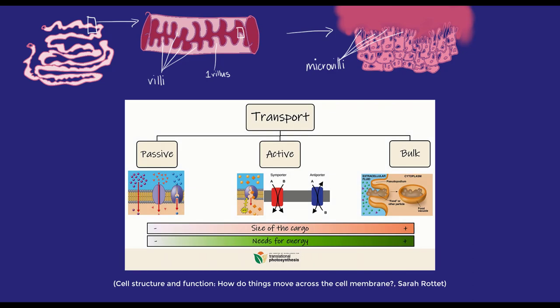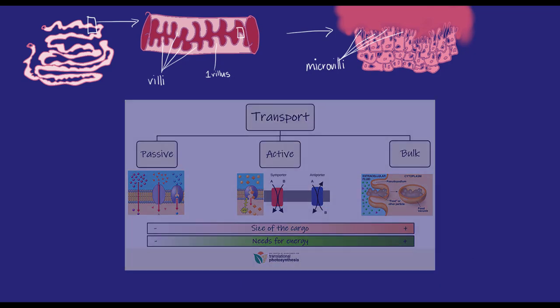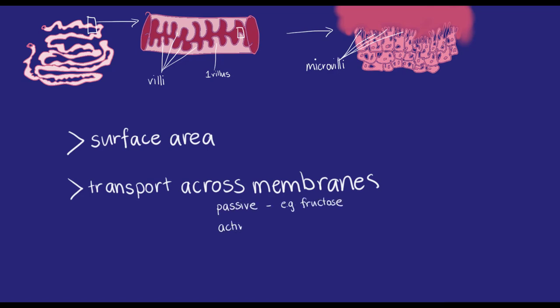A previous video talked about active and passive transport across membranes. Some nutrients, such as the sugar fructose, move into the epithelial cells by passive diffusion. Others, like amino acids, glucose and vitamins, require active transport.